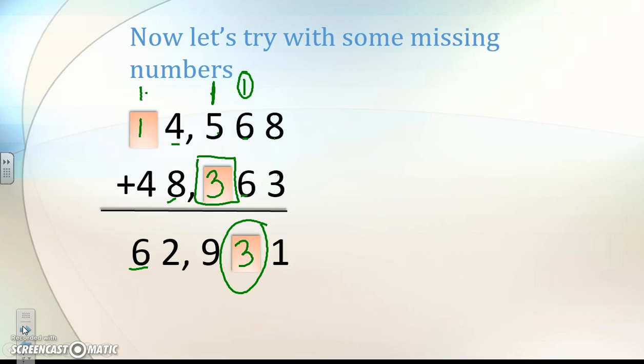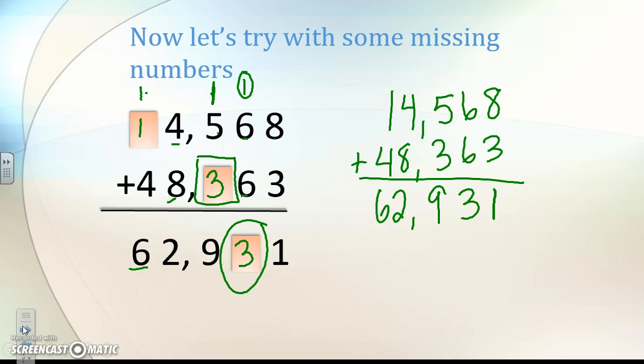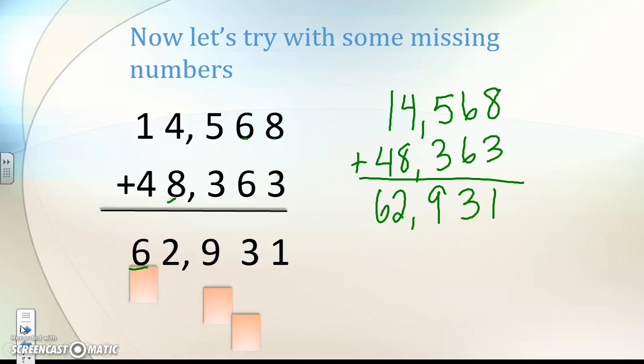Now, let's check and see if we were correct. So we had in our problem 14,568 plus 48,363 should be equal to 62,931. Alright, so I'm going to erase this, and let's check to see if we were correct. And let's look at our numbers. So we have our three, we have our other three, and our one. So we were correct.